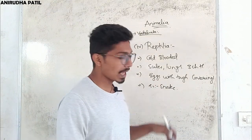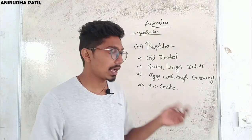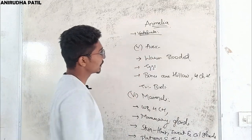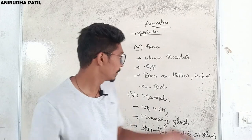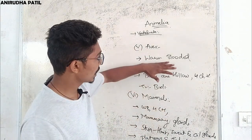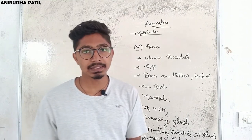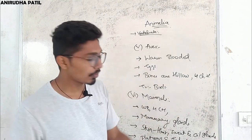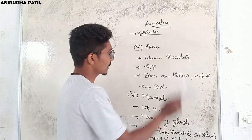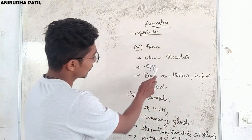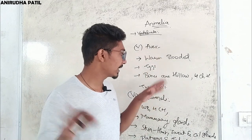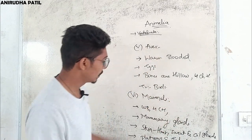The next group in Vertebrata is Aves. Consider any bird — they are warm-blooded, meaning they cannot change their body temperature with the external environment. Their bones are hollow, which helps them fly. The heart is four-chambered. Example: any bird.